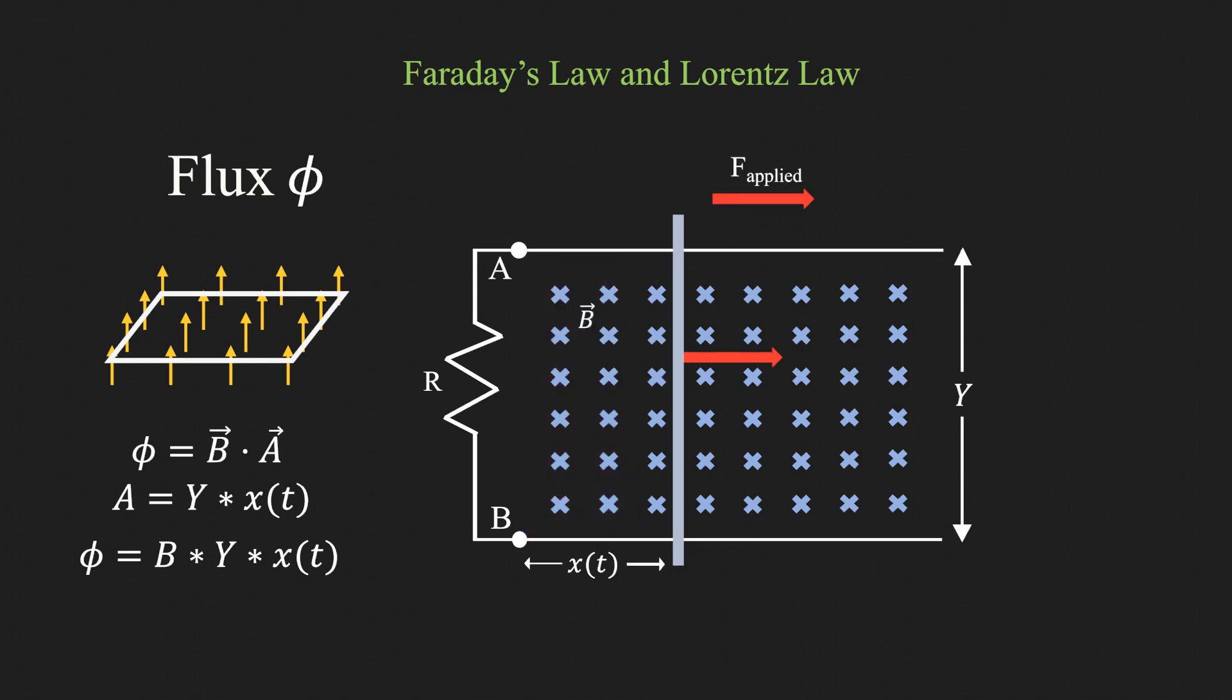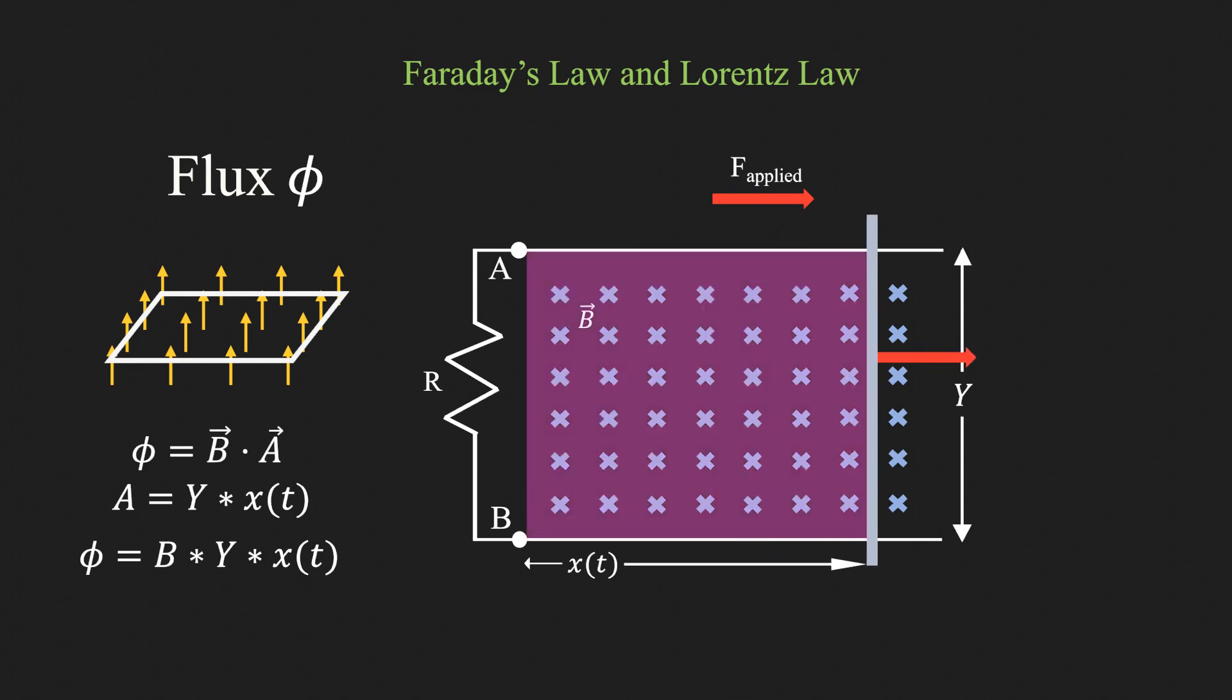Now, let us apply a force on the metal rod so that the rod moves towards the right. x(t) will increase and this will increase the area enclosed by the closed loop. So what we have done is produce a change in the flux. Specifically, we increase the flux.